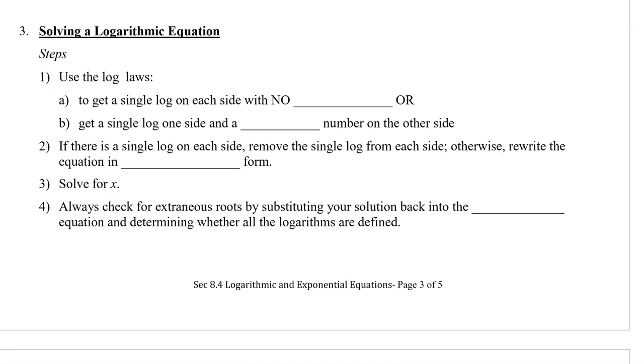Two situations can arise. First, you can get a single log on each side, but then make sure that there is no coefficient in the front of the log, and you can do this by using your power law to move the coefficient to the exponent.